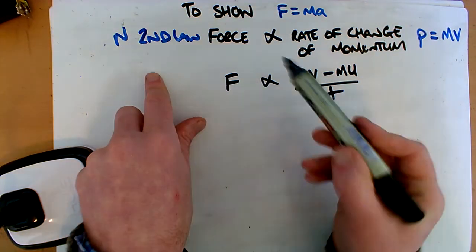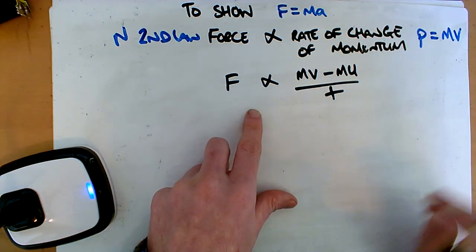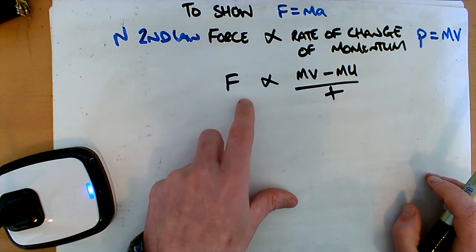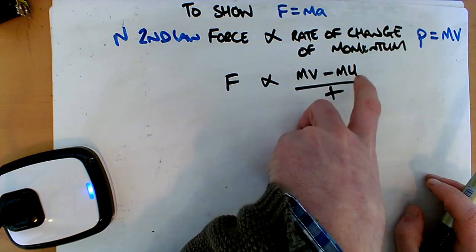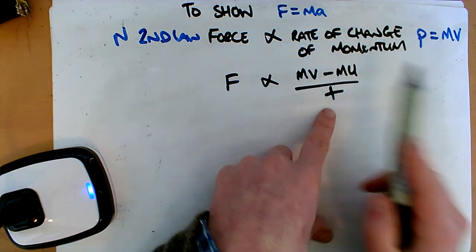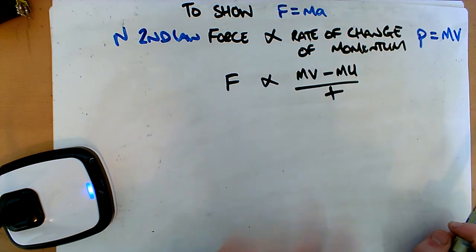That's what Newton's law tells us. It says it at least in words, and that's what it is in maths. The force is proportional to the final velocity minus the initial velocity divided by time, which is the rate of change of momentum.